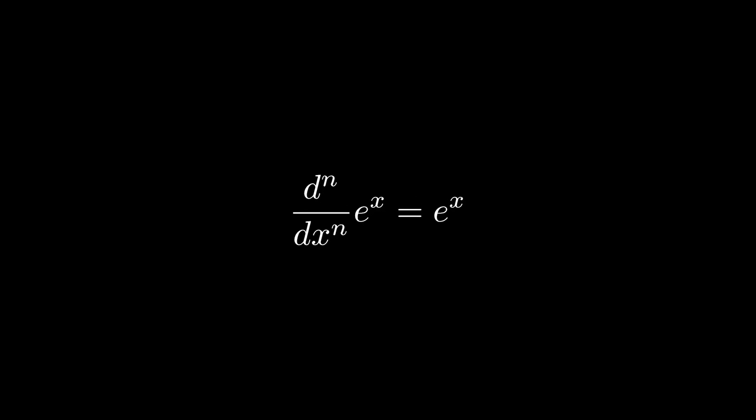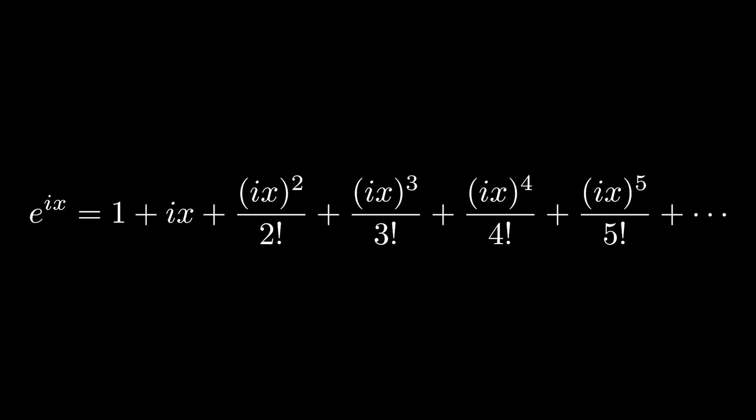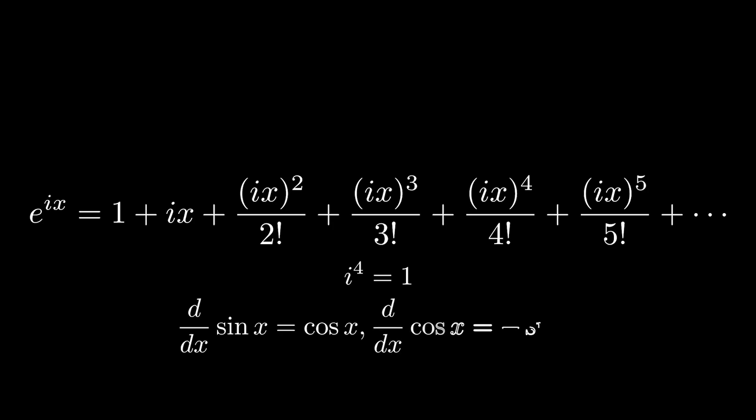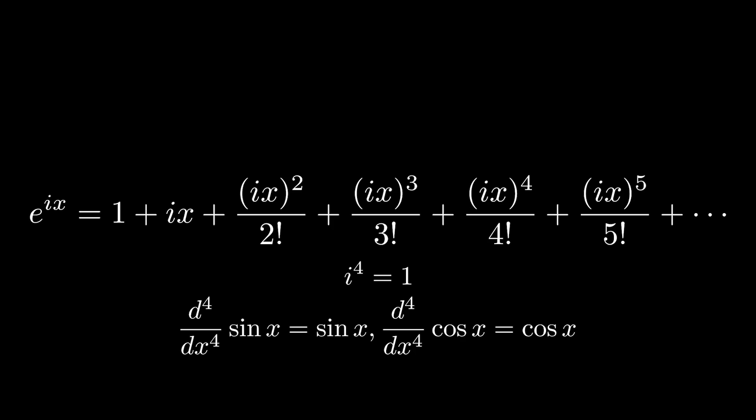However, there is an even simpler Maclaurin series from the simplest of derivative rules: e to the x. Since any order derivative of e to the x is just e to the x, and e to the zero is 1, the Maclaurin series of e to the x is amazingly simple. The simplistic nature of both e to the x and the trig functions' Maclaurin series begs for a connection, but we need a way to change the signs. This is where the imaginary constant comes in. The Maclaurin series of e to the x allows imaginary exponents to actually be calculated, and i has the property of cycling through values when exponentiated: i, negative 1, negative i, 1 — paralleling the derivatives of sine and cosine.